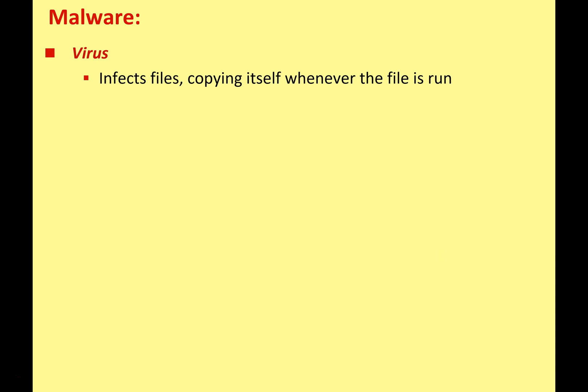We'll start with a virus. This is the classic type of malware — they've been around for a long time. A virus is simply a piece of software that infects files and copies itself whenever that file is run. So you have a program file, you double click on it, there's a virus in that, you've now activated it, and it can now spread and copy itself across other files on your system.